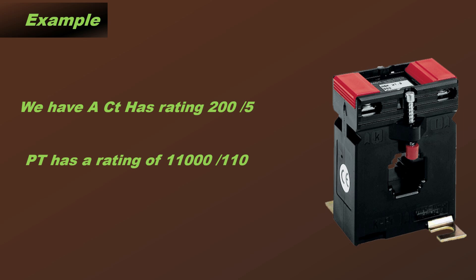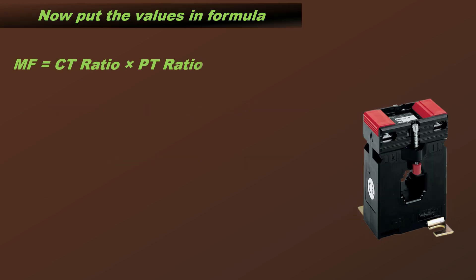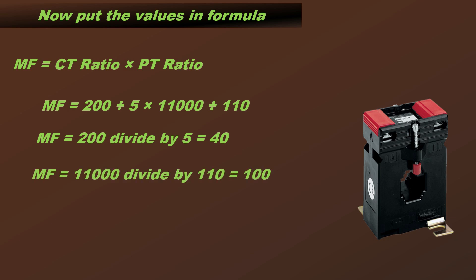Now putting the values in the formula: Multiplication factor = (200/5) × (11,000/110). 11,000/110 = 100. Multiplication factor = 40 × 100, so the answer is 4,000.